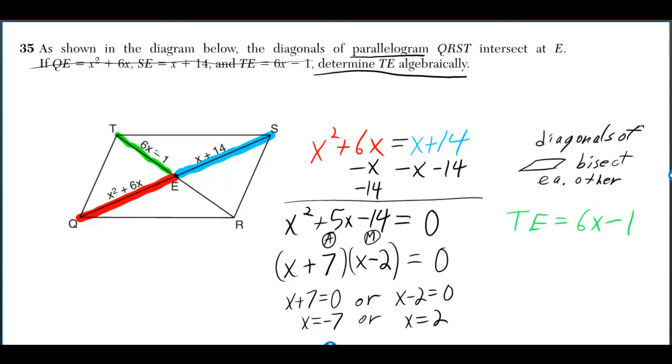TE is equal to 6X minus 1, and we have to plug in for X. If you plug in the 2, 6 times 2 minus 1 is 11. If you plug in the negative 7, you get negative 43. But a negative length doesn't make any sense, so the answer is 11.